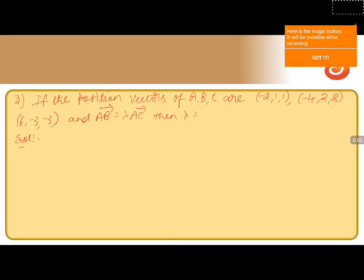If the position vectors of A, B, C are minus 2, 1, 1; minus 4, 2, 2; and 6, minus 3, minus 3, and AB vector equals lambda into AC vector, then we need to find the value of lambda. The given points are A, B, C, so we'll write their position vectors.